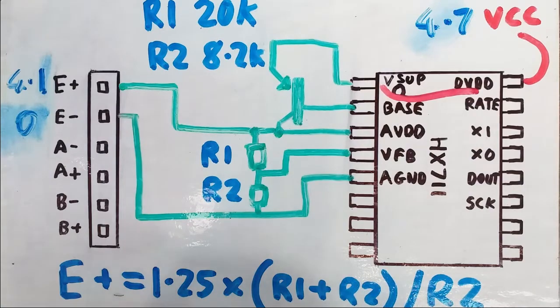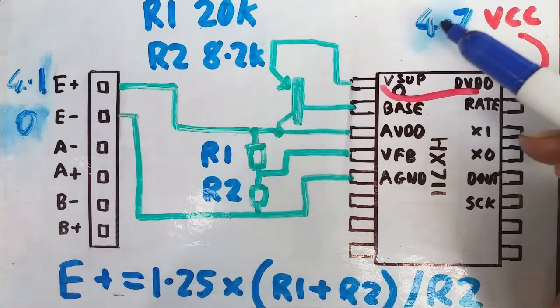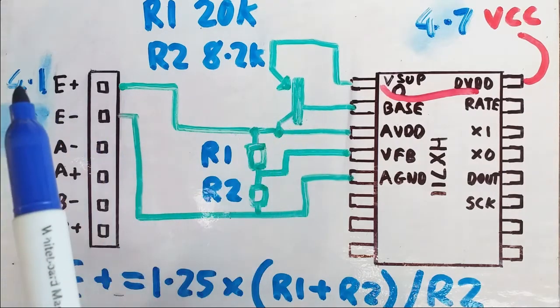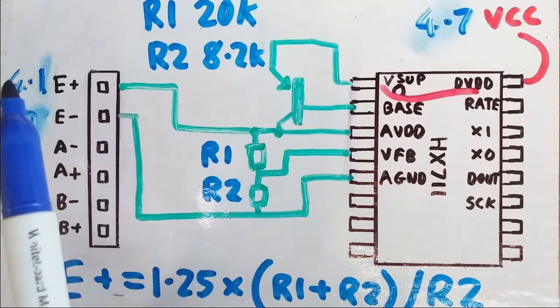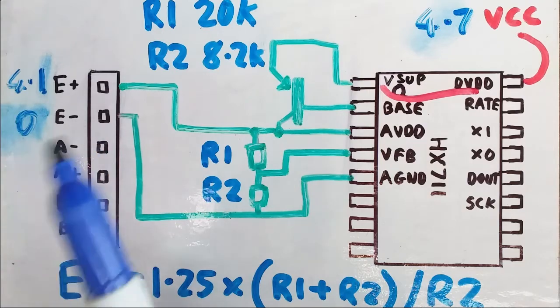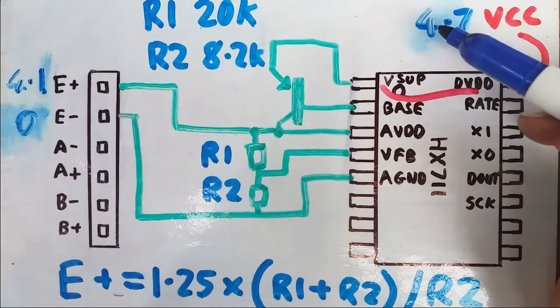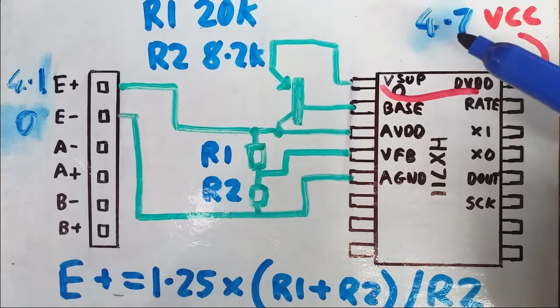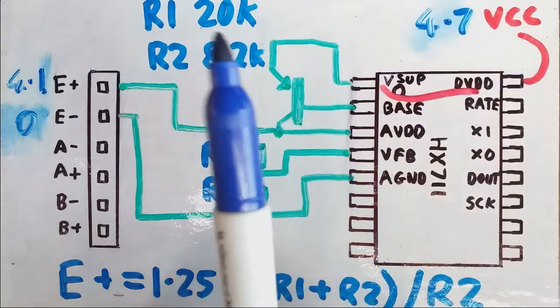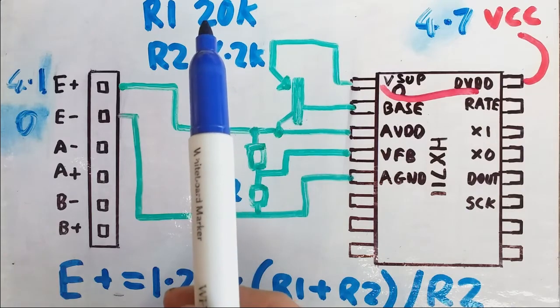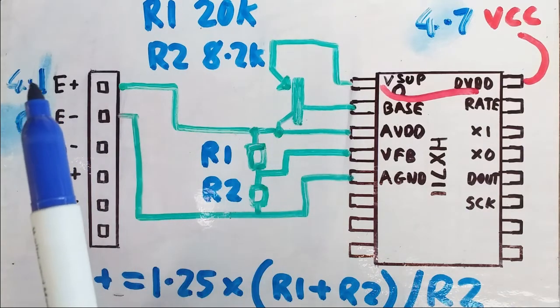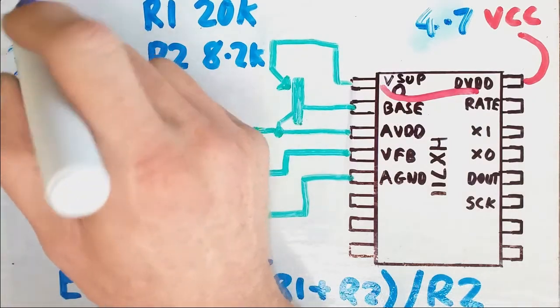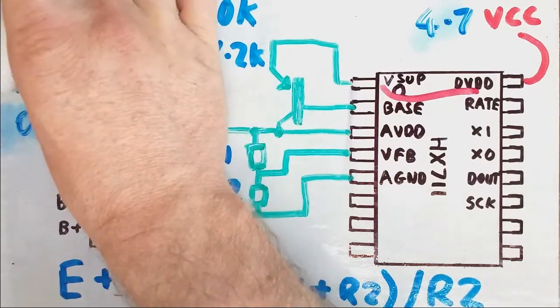But if you want to put a much lower voltage in here then you will need to make sure that this excitation voltage is dropped much lower. A common one I found online was if you want to put 3.3 volts in here, very common on more modern boards, is to change this to 10k and then that's supposed to give you around about 2.7 volts out here instead of the 4.1.